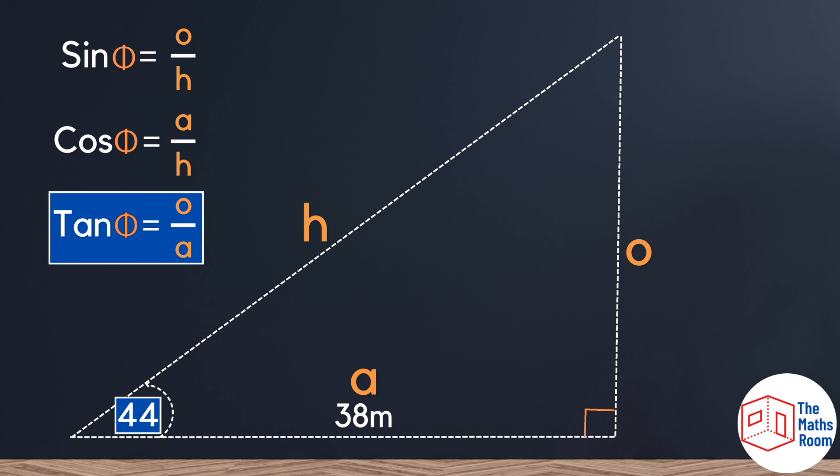Finally we have tan. Here we've been given the 44 degrees. We've been given the adjacent side and we're interested in finding out the opposite which is the height of my tree. With all three ticks we know that we can proceed with tan.